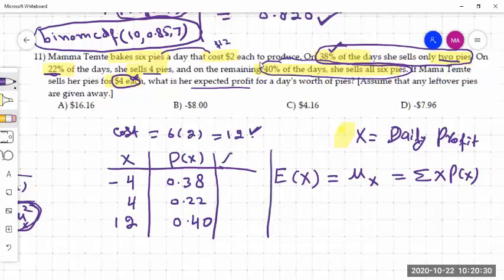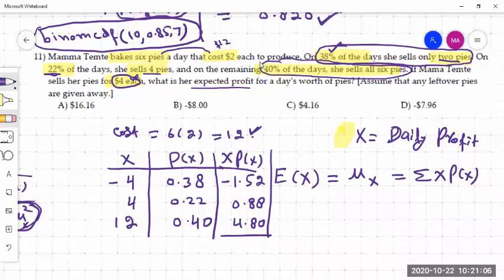So X times P of X: negative four times 0.38, so that would be equal to negative 1.52. And four times 0.22 is 0.88. And twelve times 0.4 is 4.80. And now sum this up. And now you see that the last two terms are positive and you add these two and then subtract the first term out of it. So this would turn out to be 4.16. And this is our expected profit. So E of X equals 4.16.